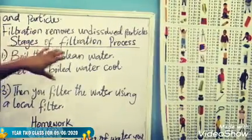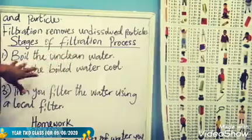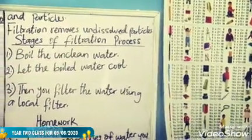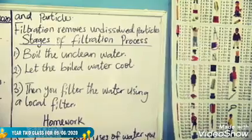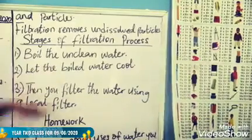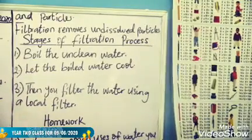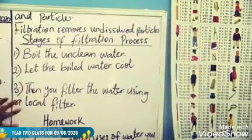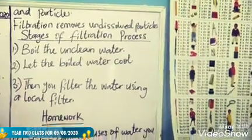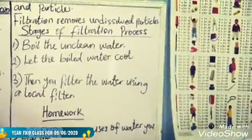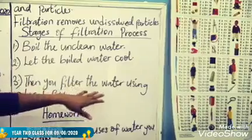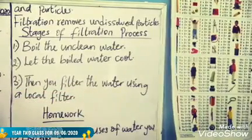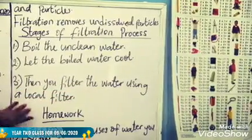We have stages of filtration. First, you boil the unclean water. Then you let the water that you boiled cool down. You allow it to cool. Then you filter it using a local filter.